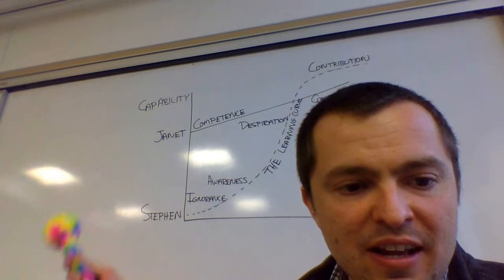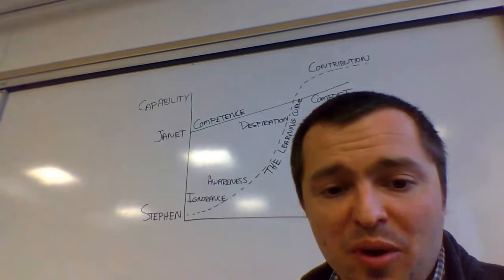We have Janet. We have Steven. Janet hits the ground running. She's competent. She'll be able to contribute right away. Steven's going to have to ascend a learning curve before he's able to contribute.